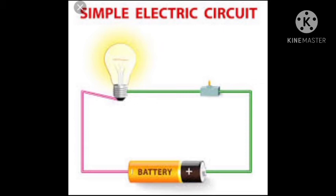A closed conducting path along which electric current flows is called an electric circuit. A simple electric circuit consists of a source of electric current such as a cell or battery, a conducting wire such as copper wire, an electric appliance like a bulb, and a switch or key.